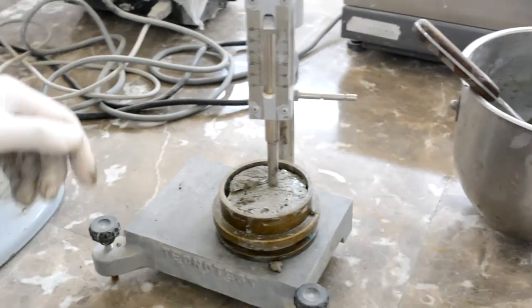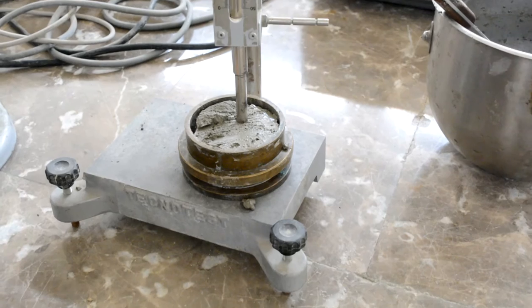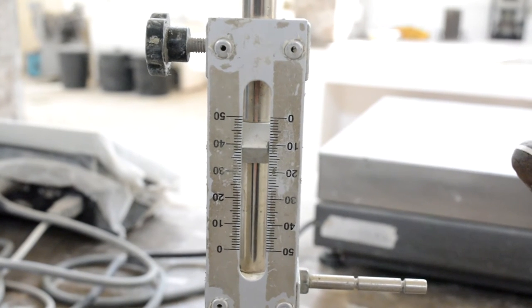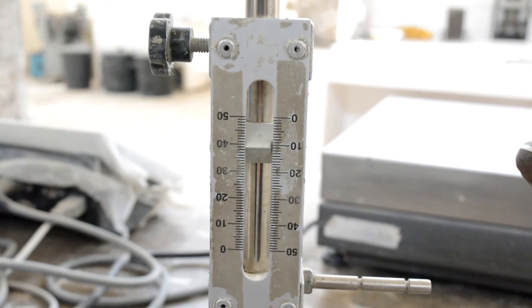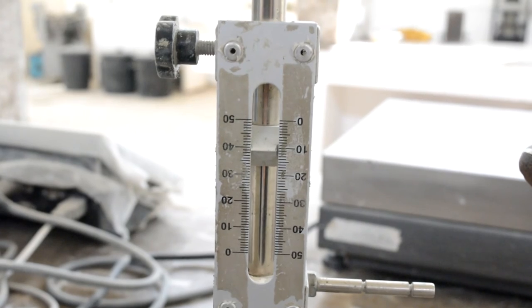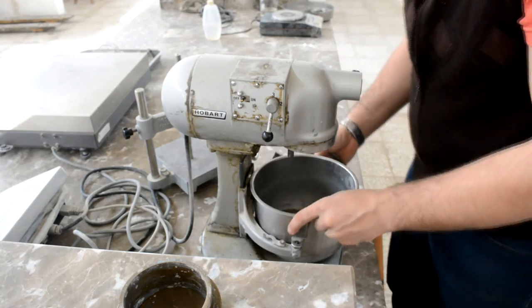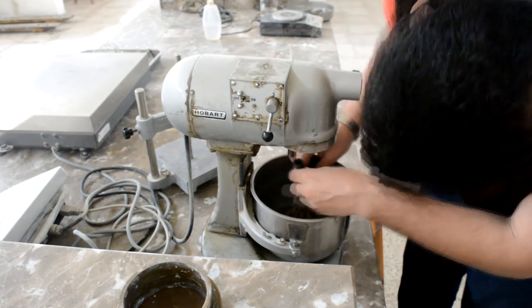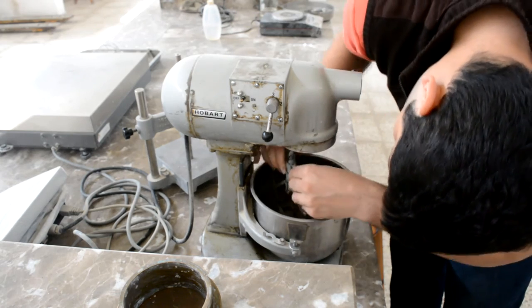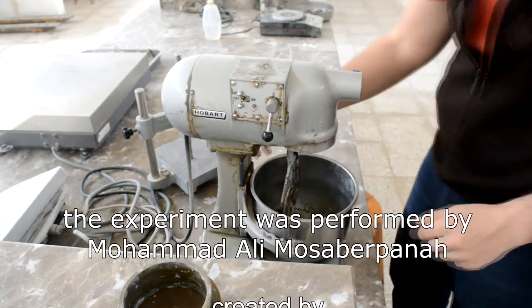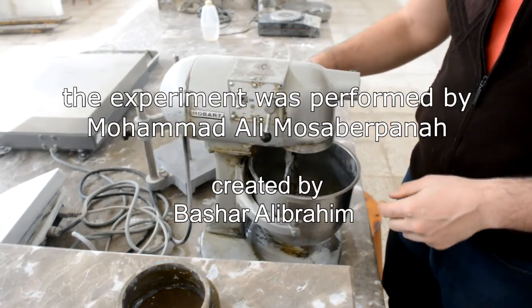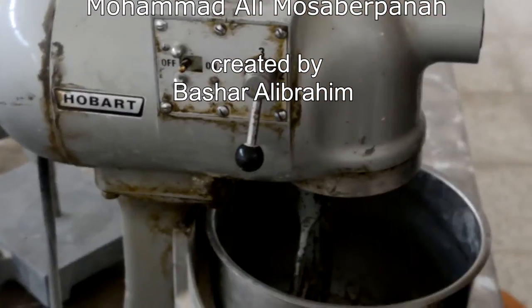Release the rod. The rod will penetrate the paste. The normal consistency is obtained when the penetration is equal to 10 millimeters after 30 seconds of forming the ball paste. So you have to repeat the experiment with different amounts of water till you meet this objective. And by that we were able to determine the normal consistency of hydraulic cement.